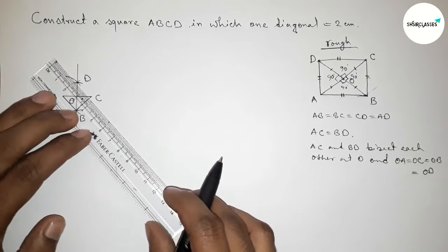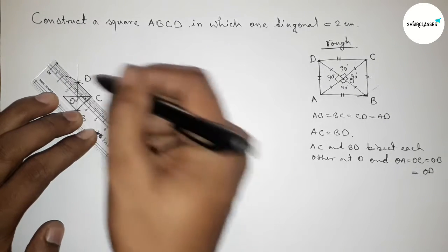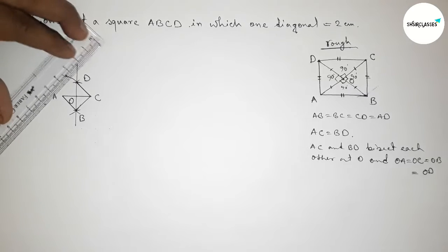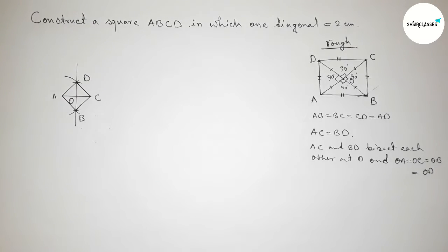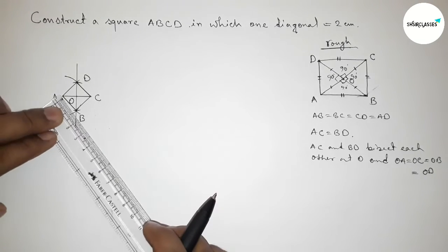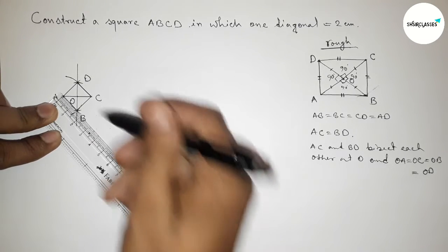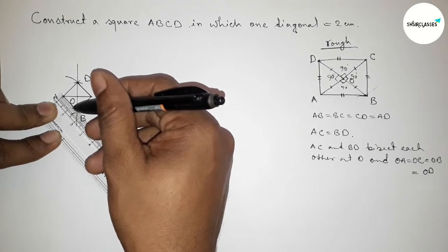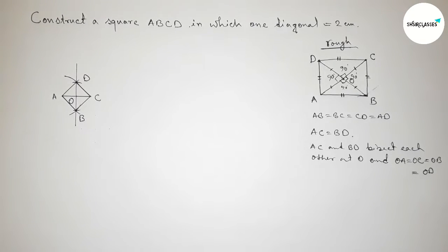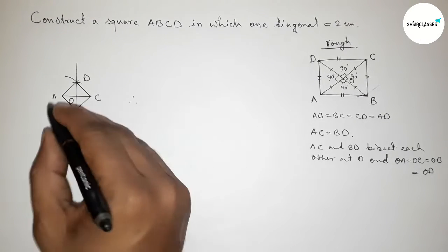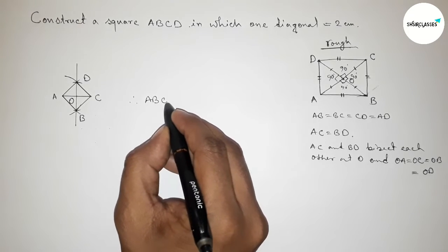So taking here B and here D. So first now joining A and B first, then joining the side BC. Joining, next joining CD and last joining AD. Okay, so now I'm going to check the length of each side of the square.